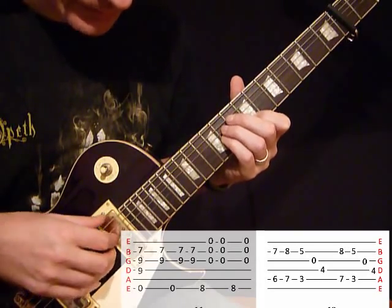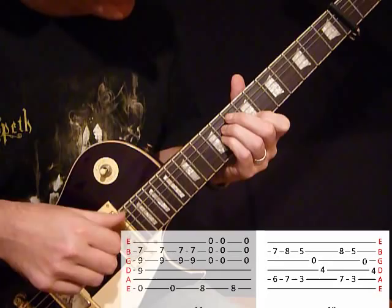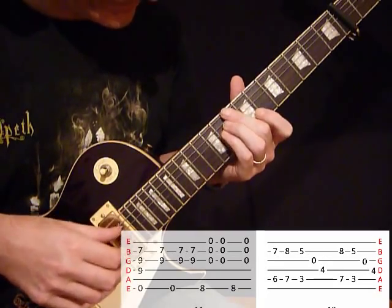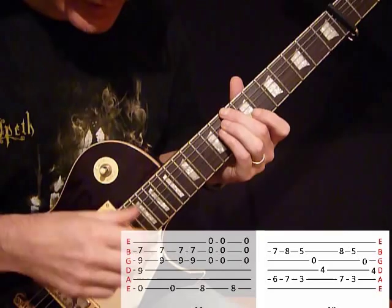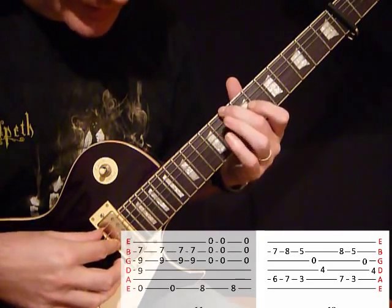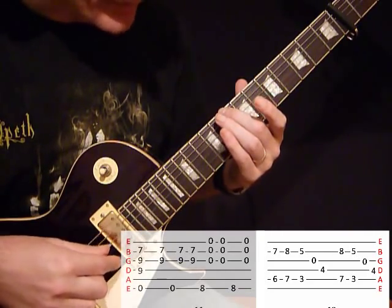So your 3rd finger on those D, G and B strings, and your 2nd finger on the 8th fret. And you play that together with 3 open strings: G, B and E.